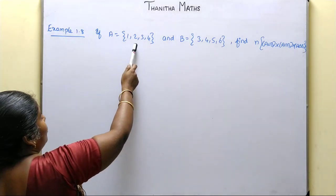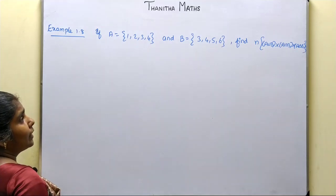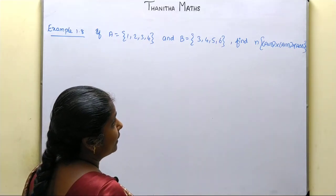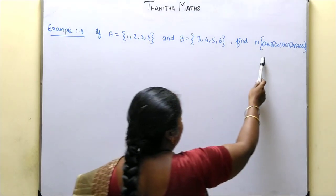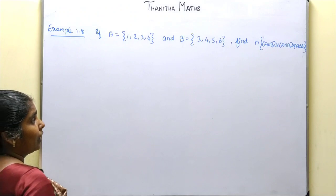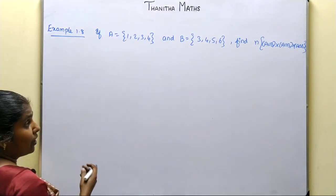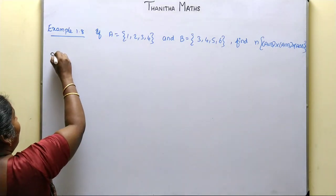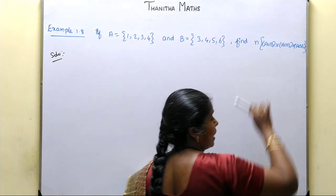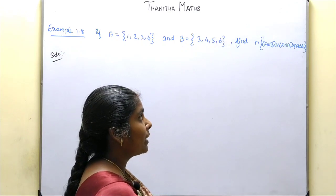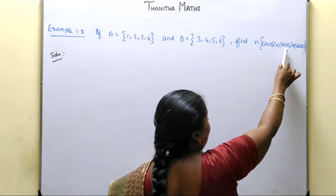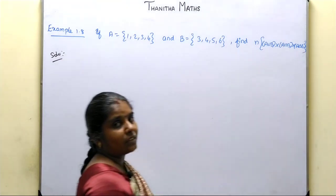If A is equal to {1, 2, 3, 4} and B is equal to {3, 4, 5, 6}, find n(A∪B) × n(A∩B) × n(A△B). We have to find n(A∪B) × n(A∩B) × n(A△B).